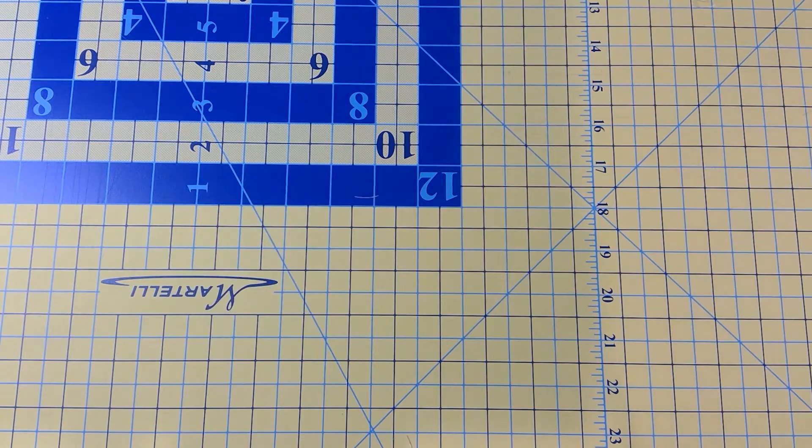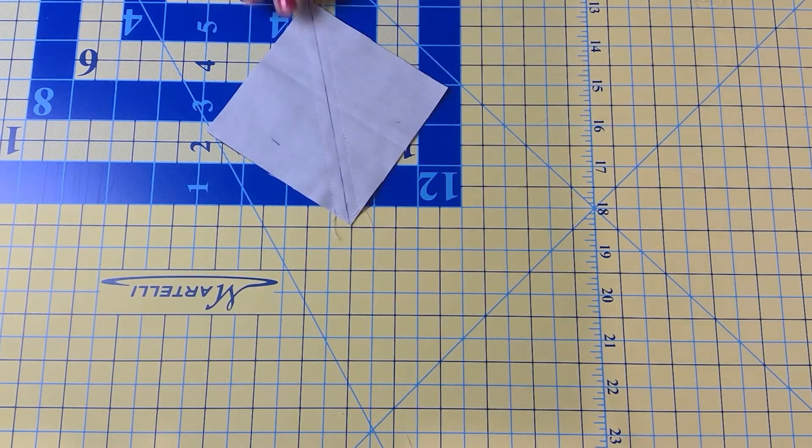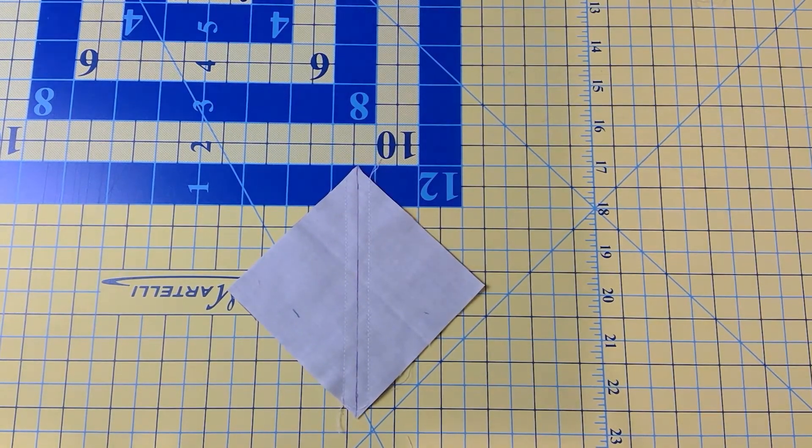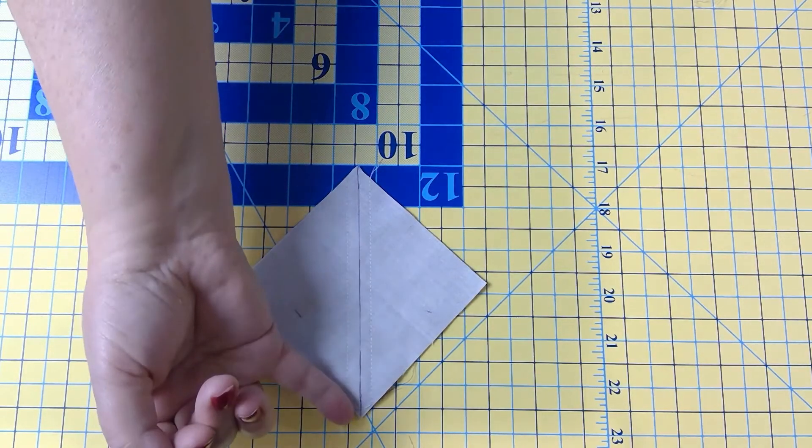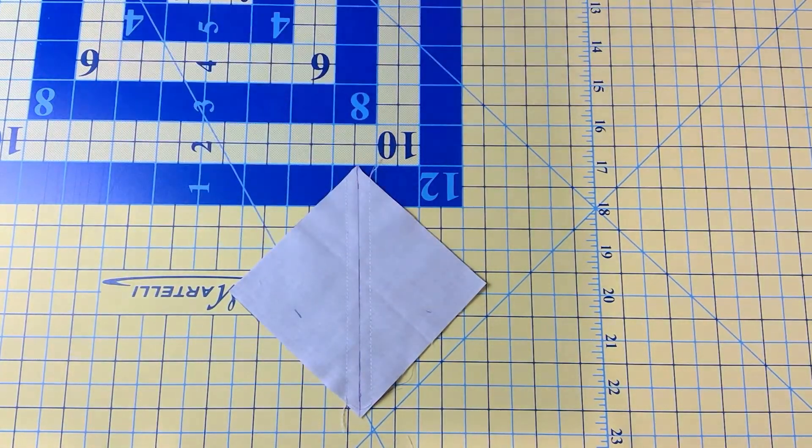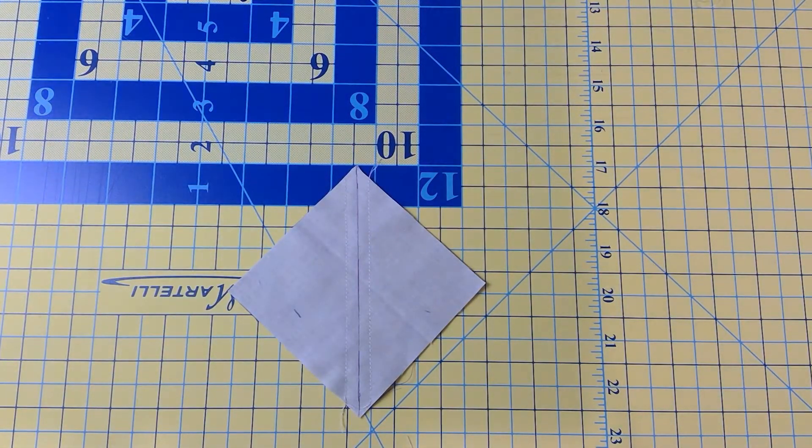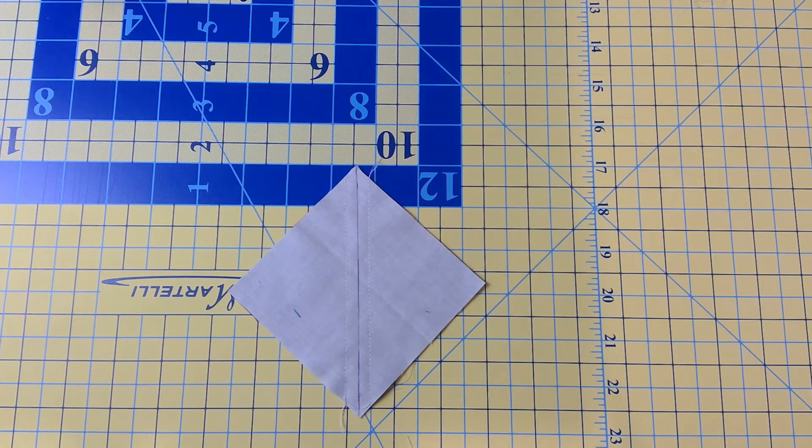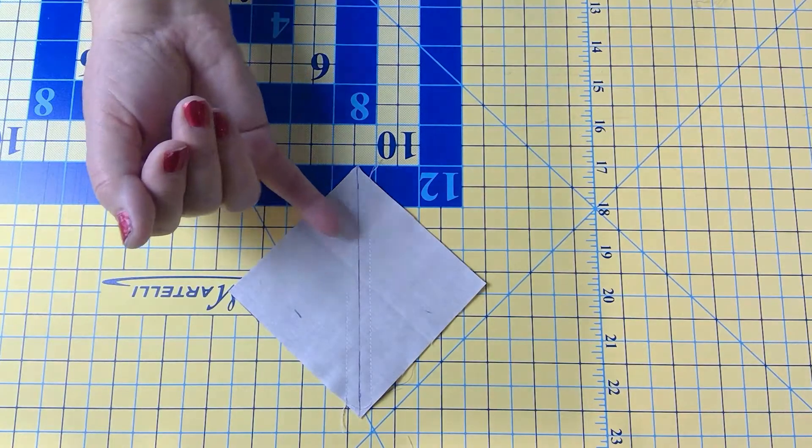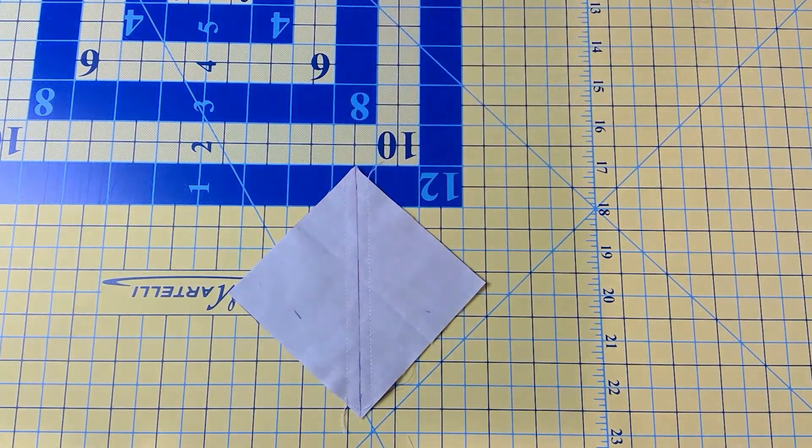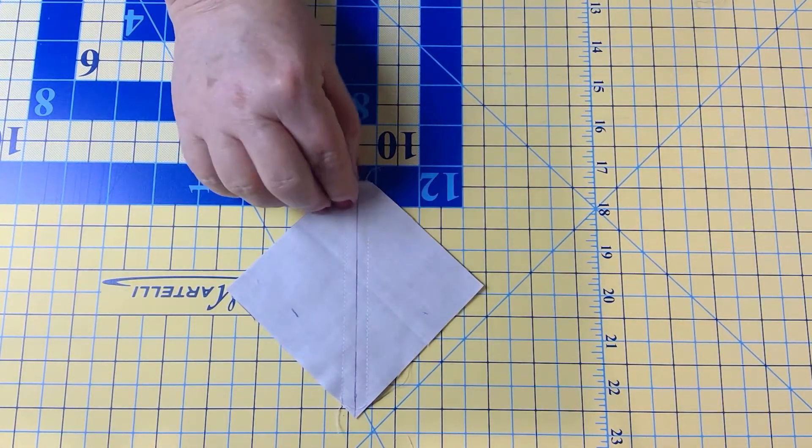So for the next step we are going to be making our half square triangle. You're going to draw a diagonal line from corner to corner on the wrong side of your lighter fabric, whichever one you can see the line on. Next you're going to sew a quarter inch seam on either side of the line, and from there you're going to cut it apart.